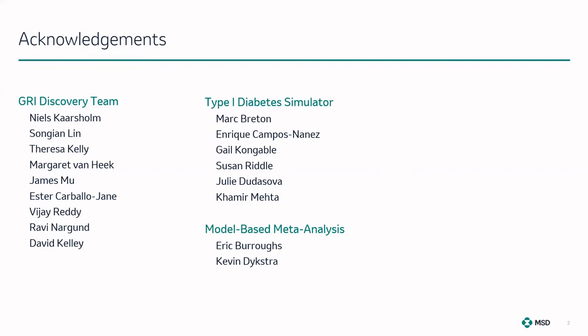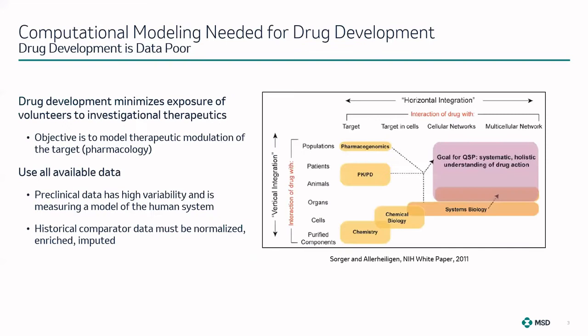This was a large team effort. The glucose responsive insulin discovery team included experimental biologists and chemists. They collaborated with the University of Virginia, notably Mark Breton, and with a company called Qfarmetra on model-based meta-analysis.